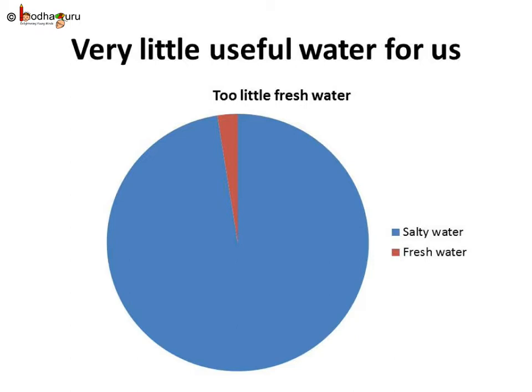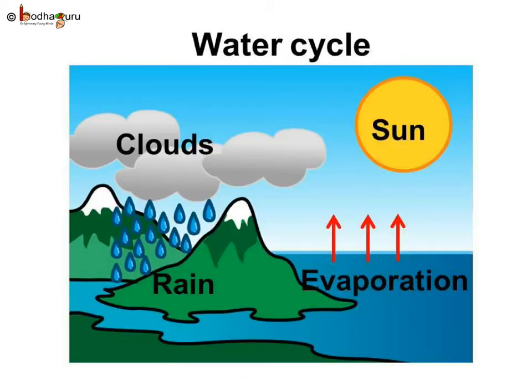Then why does all water not get used up? In fact, due to the water cycle, the water circulates from earth to atmosphere and forms clouds. Then that water comes back to earth again as rain or snow. So we are reusing the same water again and again for thousands of years.